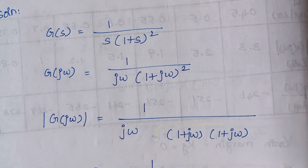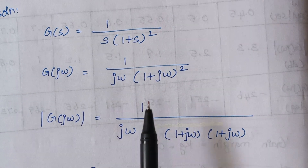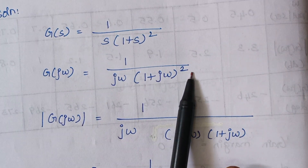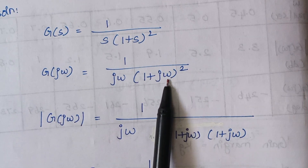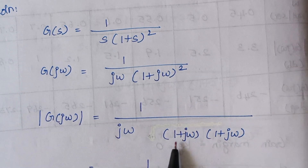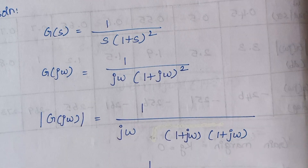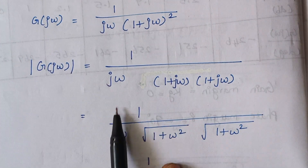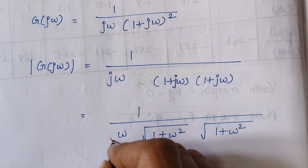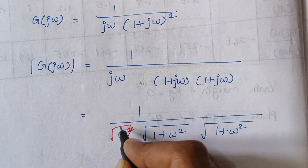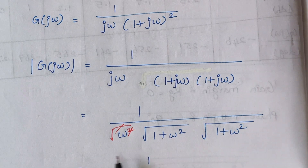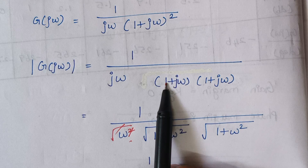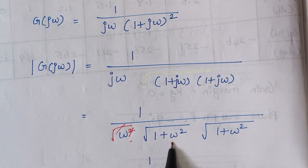The magnitude expression is calculated as follows. I had written j omega here as such, and (1 + j omega) squared is written as two terms: (1 + j omega)(1 + j omega). The magnitude of j omega is the square root of omega squared, and the square root and square cancel, giving simply omega. For (1 + j omega), the magnitude is square root of 1 + omega squared.